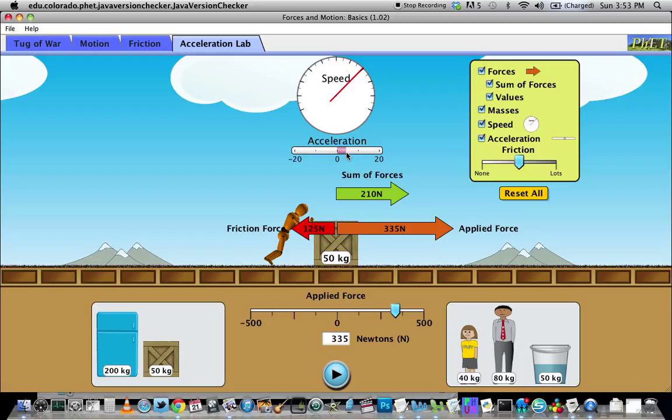Now, this acceleration meter is pretty hard to read. It goes up to 20 here, so this number would be 10. And halfway in between, it would be like 5, so maybe this might be 4 or so, maybe 3 and a half. It's hard to tell. So there's going to be some uncertainty in your reading there.